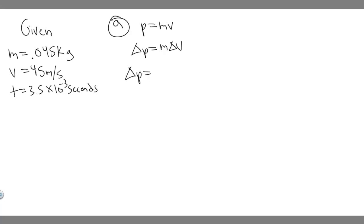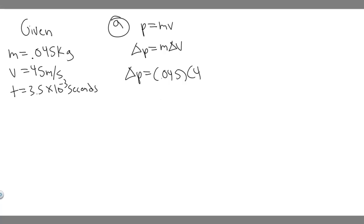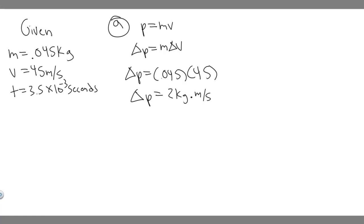So delta P, the change in momentum, is equal to the mass, which is 0.045, multiplied by the change in velocity. We know we're starting at rest, so the ball goes from 0 to 45 meters per second. The change in velocity is 45 minus 0, which is 45. So 0.045 times 45 gives us 2.025 — I'm just going to round to 2. So delta P equals 2 kilogram meters per second. This is your answer to A, the impulse imparted to the golf ball.